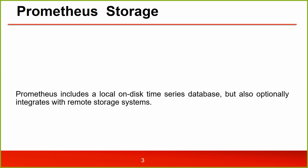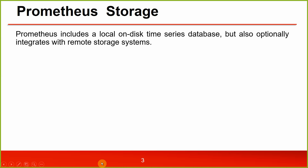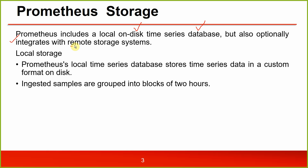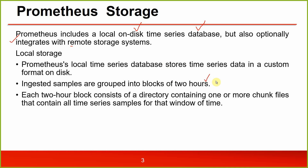Prometheus storage: Prometheus includes a local on-disk time series database but can also optionally integrate with remote storage systems. The local storage stores time series data in a custom format on disk. Ingested samples are grouped into blocks of two hours. Each two-hour block consists of a directory containing one or more chunk files that contain all time series samples for that window of time.